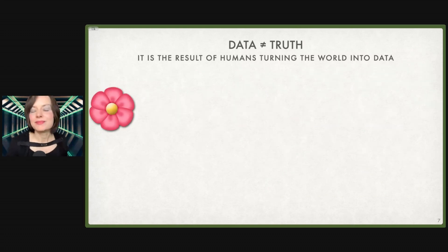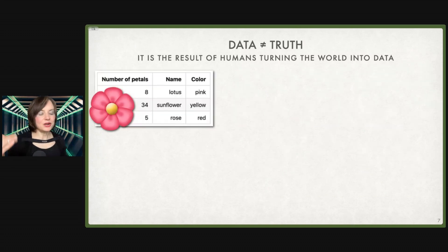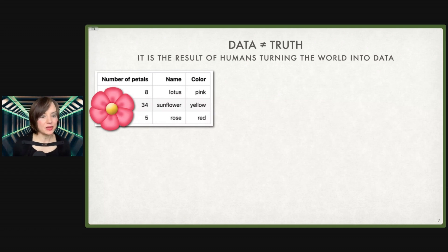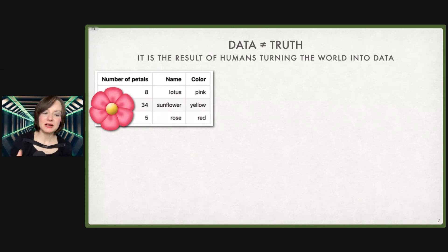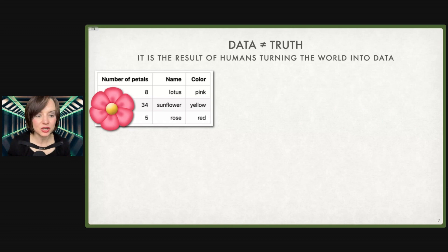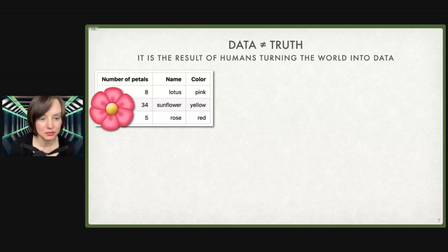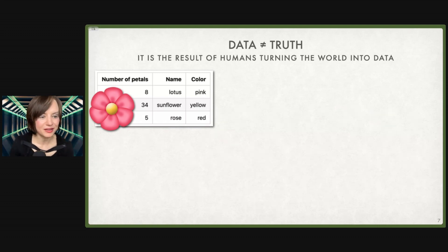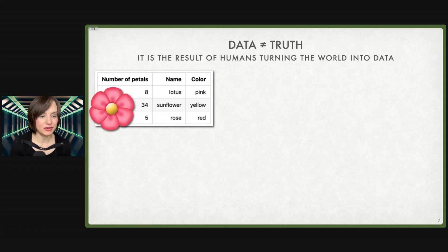For example, this is a flower. We could record some data about that flower. We might write down the number of petals. We might say what type of flower it is. We might identify the color. Those are all different pieces of data — different pieces of information we can collect to describe that flower. And there are tons more that someone with more subject matter expertise could certainly flesh out.